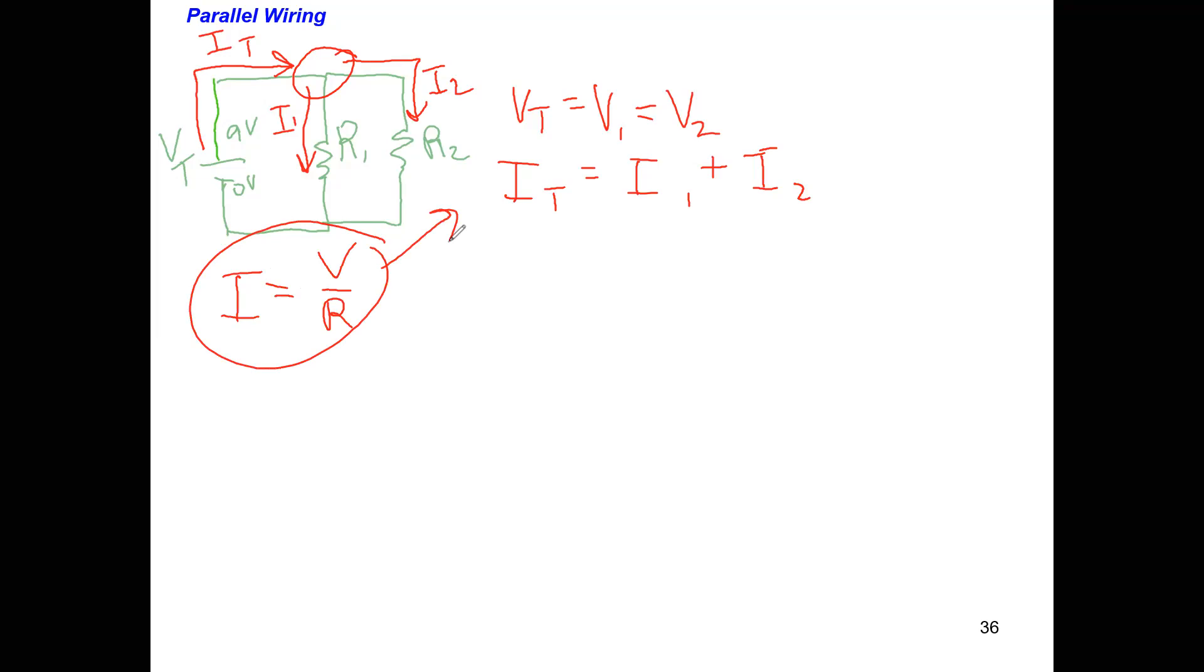We can plug this in to our expression there for current and see what happens as a result. We've got to hold on to all the subscripts. On the right hand side, we're going to have V total over R total. And this is equal to V1 over R1 plus V2 over R2. We just stuck in that expression, I equals V over R, for each one of those terms in our current equation. One thing we notice here is that all these voltages are the same. So as a result, we can cancel all those voltages out.